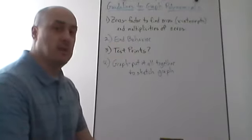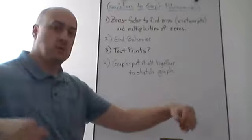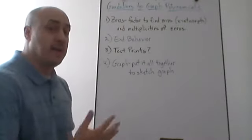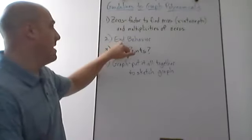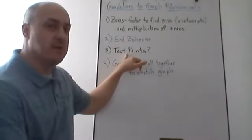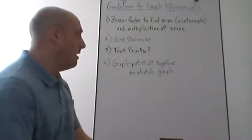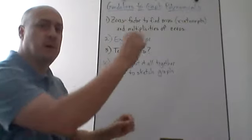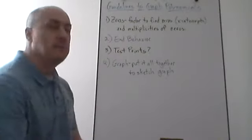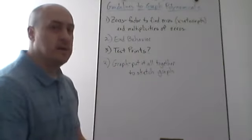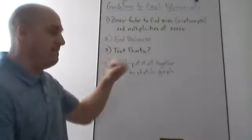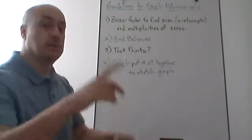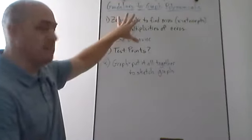Then we want to find the end behavior of the graph — do both sides go up, both go down, or is one side up and the other down? I have a whole video explaining those rules, so check that out. Test points — picking numbers between x-intercepts to see if the graph is above or below the x-axis — are optional if you've done steps one and two correctly.